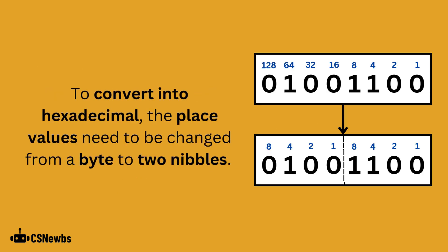To convert the number into hexadecimal, the place values need to be changed from a single byte to two separate nibbles, with 1, 2, 4, 8, 1, 2, 4, 8 as the place values.